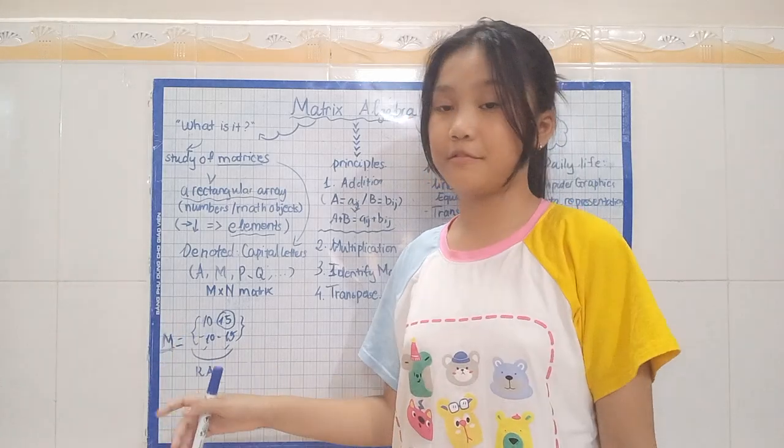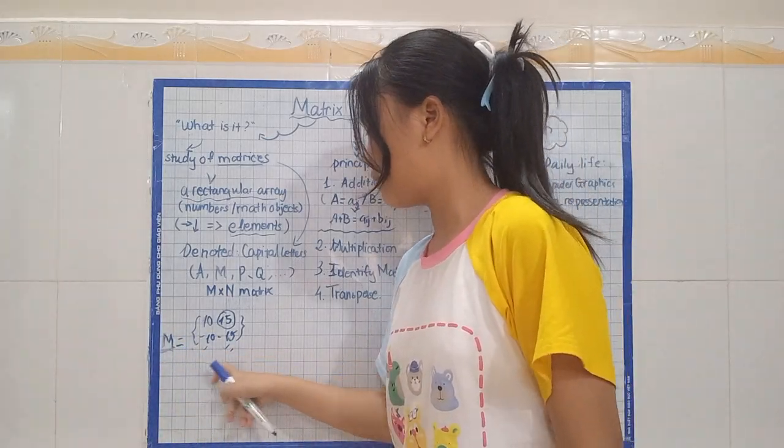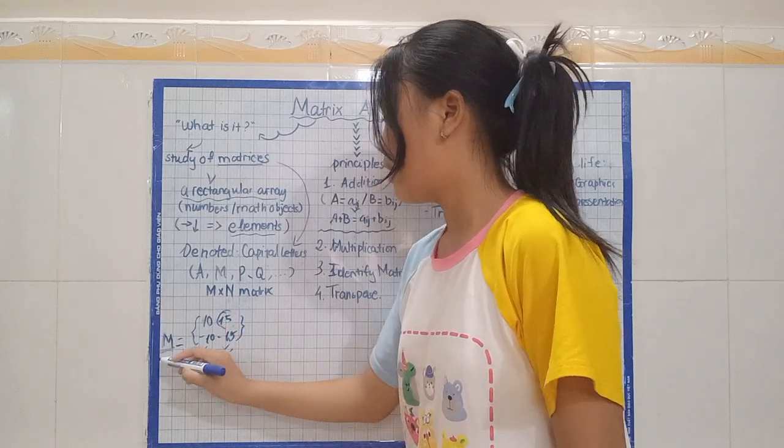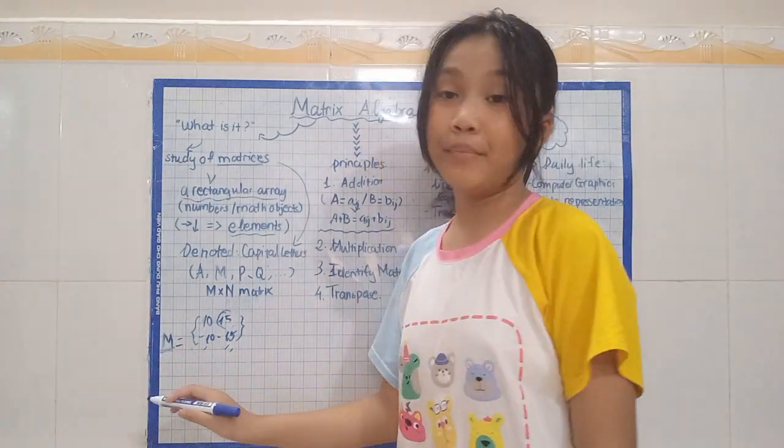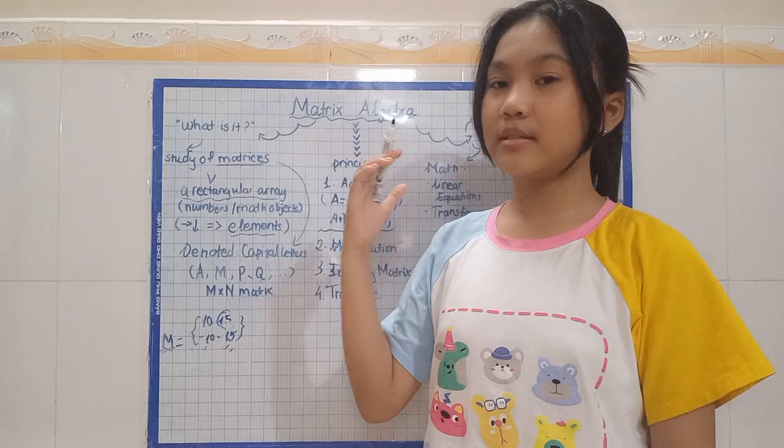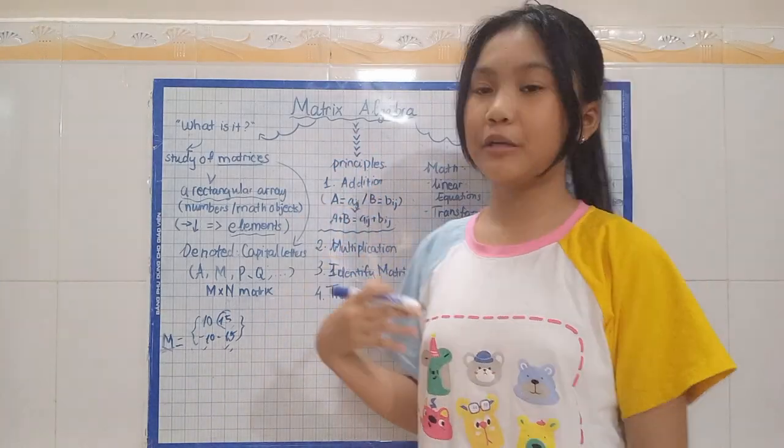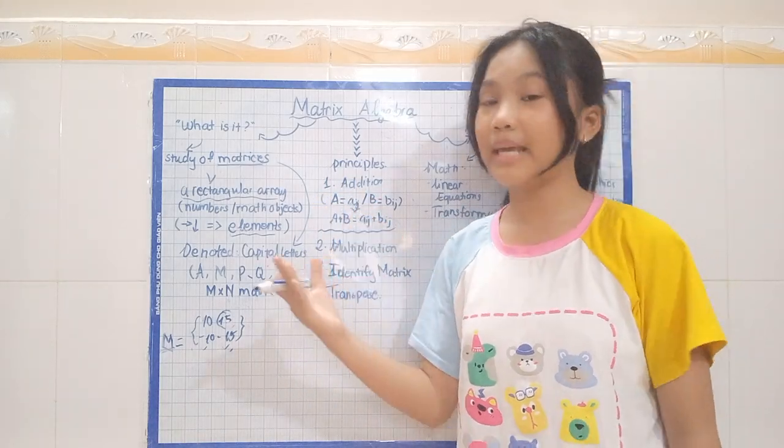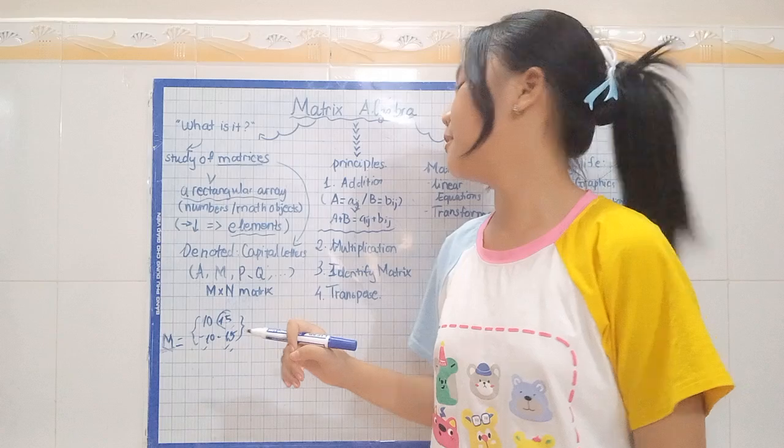As the example below that I have already shown you, our matrix here is basically named M. You can notice that it's actually a capital letter. So a matrix is usually denoted by a capital letter. It could be A, B, N, P, any letters in the alphabet.